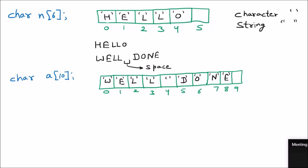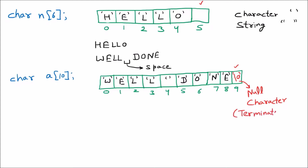You can see that I have left the last block blank intentionally, because whenever we use a character array, the compiler automatically puts '\0' at the end. We can say that it is the null character. This null character is used to terminate the character string. Whenever the compiler sees a character string, it automatically terminates it with '\0', which is the null character. This is an additional block we have to account for.